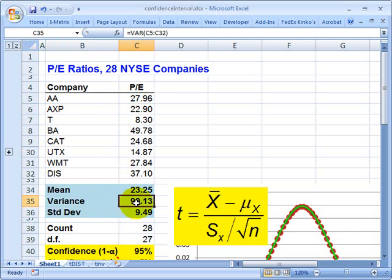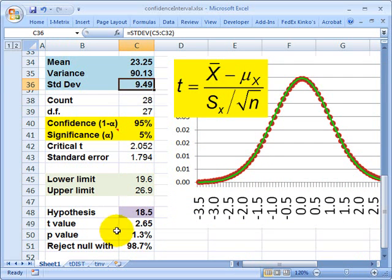And then I've got two measures of dispersion, second moment measures, the variance, and then the square root of the variance, which is the standard deviation. So now I'll move the spreadsheet down. I have a count here. It tells me that there are 28 companies in the sample. D.F. is degrees of freedom.